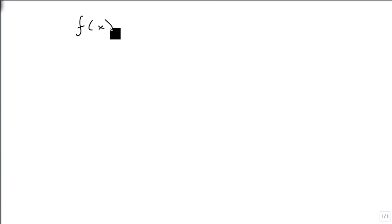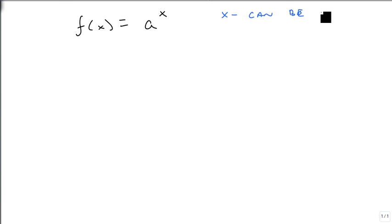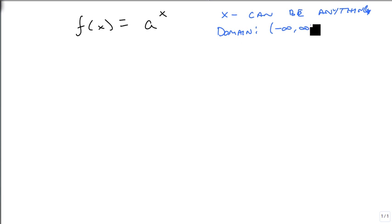One more thing to keep very straight: we're going to define an exponential function as f(x) = A to the x. This is our bare-bones default exponential function. x can be anything by definition, which means our domain for an exponential function is from negative infinity to infinity. Unless there's something unusual in the power, we're just going to say the domain is everything.